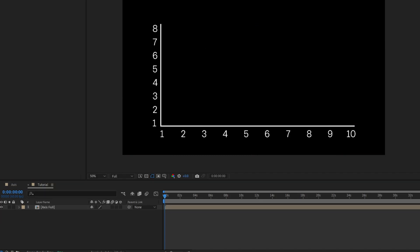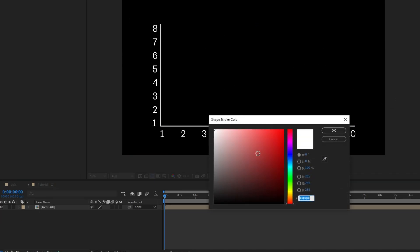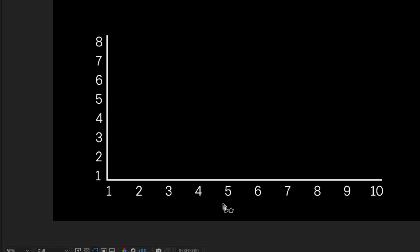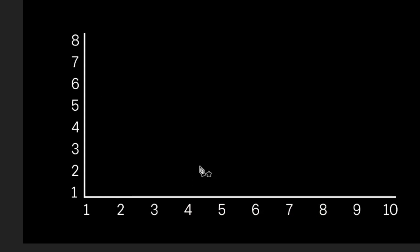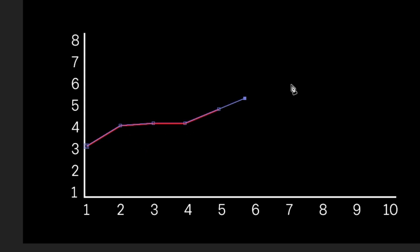I'm going to use the pen tool for this and set mine to a really bright red, and I'm just going to start drawing my lines. I'll start at three, and depending on how your data is you can do this whichever way you want. I'm going to do a general increasing line and I want it to be getting bigger and bigger all the way up to the very last one.